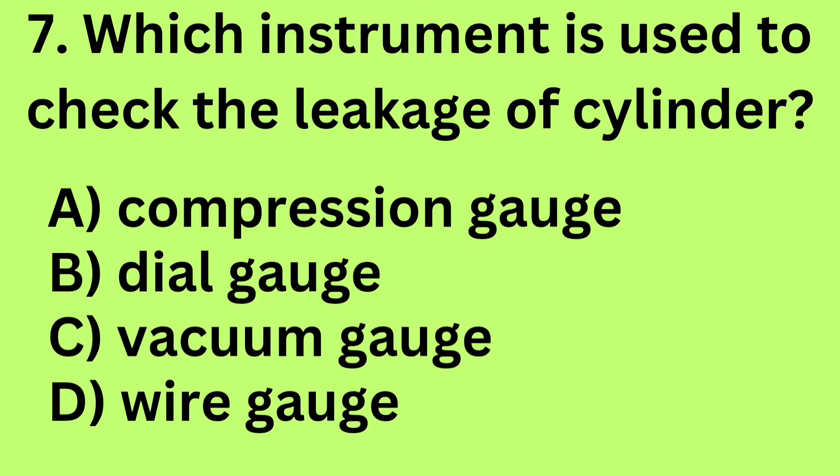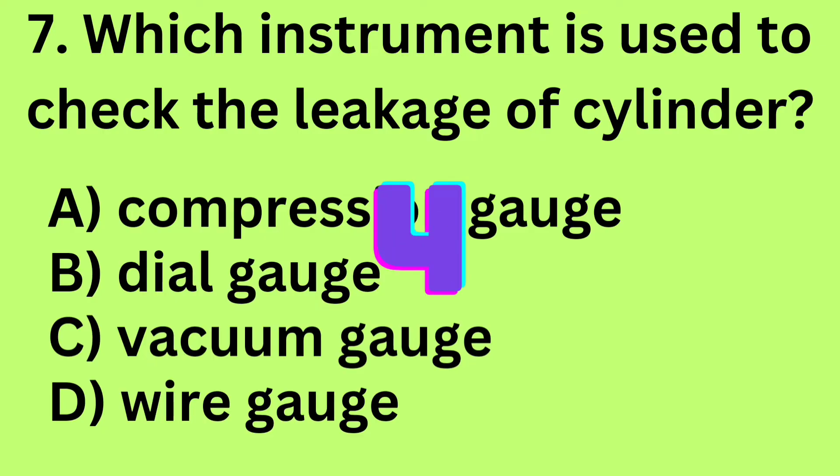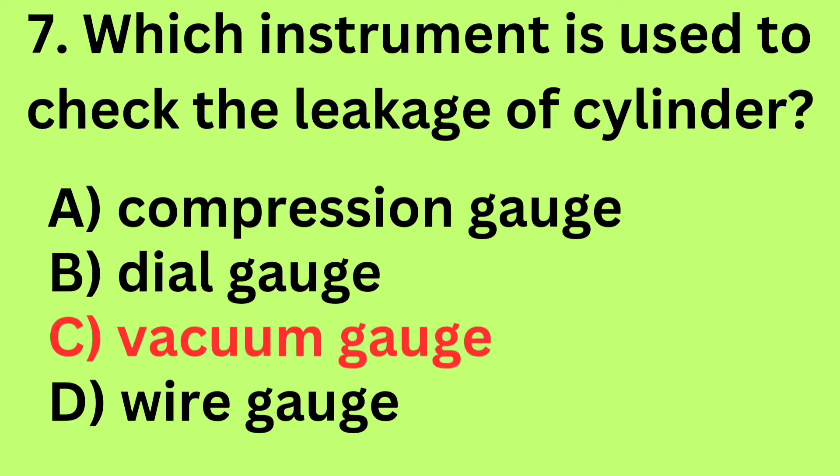Question 7: Which instrument is used to check the leakage of cylinder? A. Compression gauge, B. Dial gauge, C. Vacuum gauge, D. Wire gauge. Answer: C. Vacuum gauge.